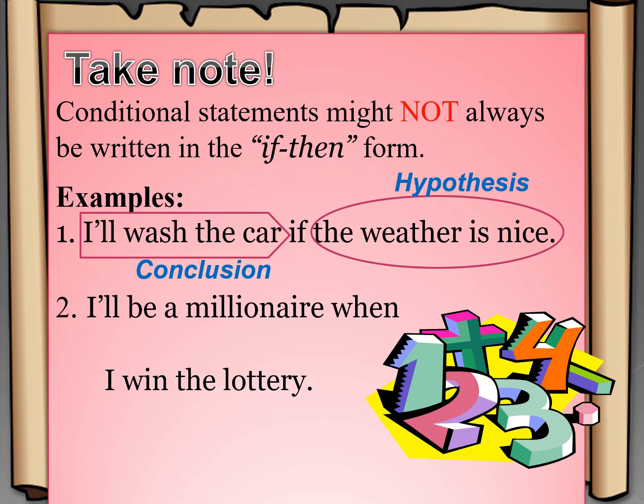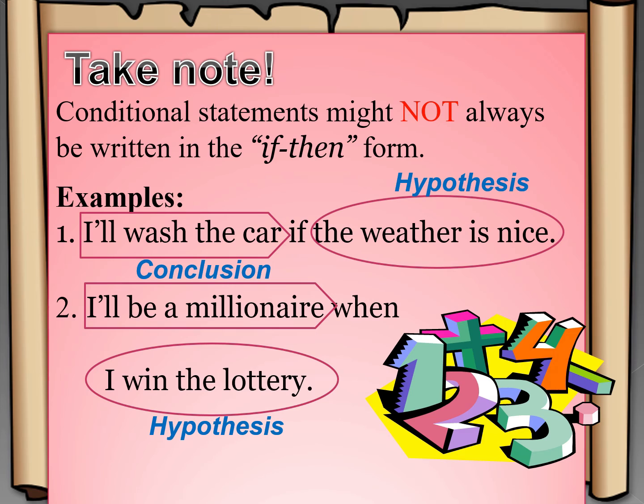Example number two: I'll be a millionaire when I win the lottery. The hypothesis is: I win the lottery. And the I will be a millionaire is our conclusion.